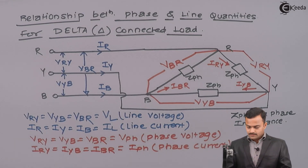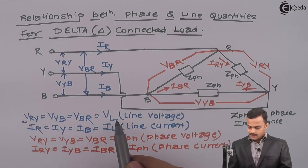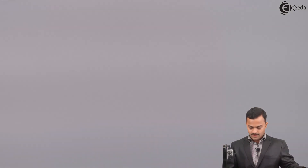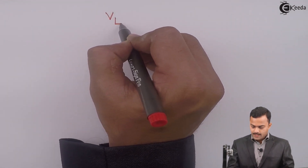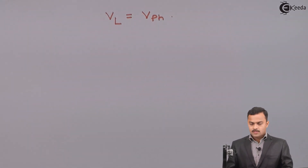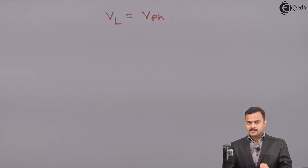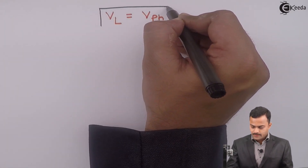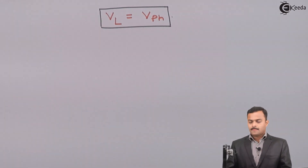Now, by looking at the diagram and the things we have listed, it is quite clear that V_RY is called the line voltage, but that same V_RY is also the phase voltage. So I can say V_L is the same as V_PH for a Delta connected load, because V_RY is both the line voltage and the phase voltage. That gives us this relationship: V_L = V_PH for Delta connected load.